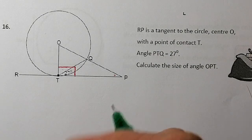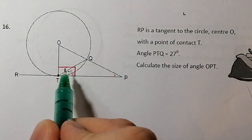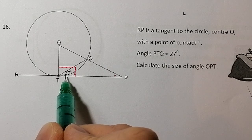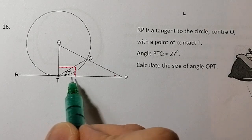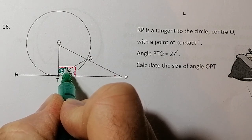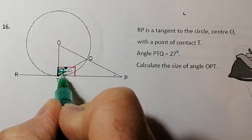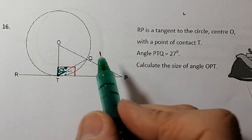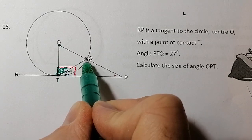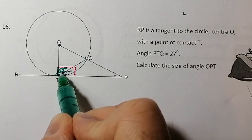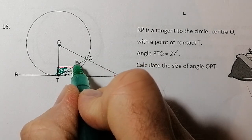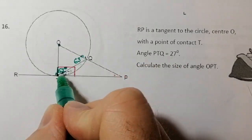Let's go ahead and solve this one. The tangent meets at 90 degrees and I've used up 27 of it, so what I should have left is 90 minus 27, which gives me 63 degrees. Another property I know: if I've got a radius from the centre to one point and a radius out to another point on the circle, those two radii form an isosceles triangle, so the two base angles are exactly the same — that's 63 degrees in there as well.